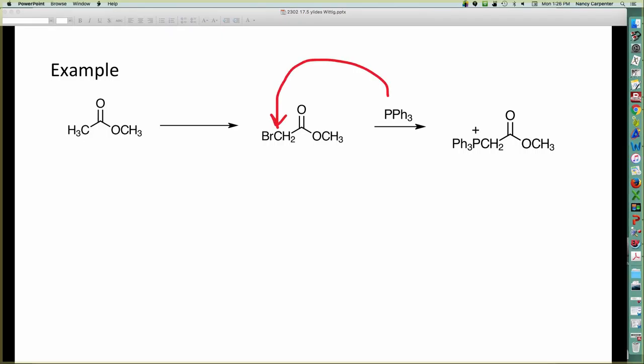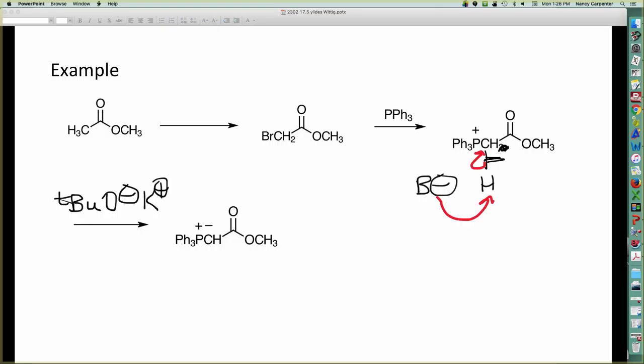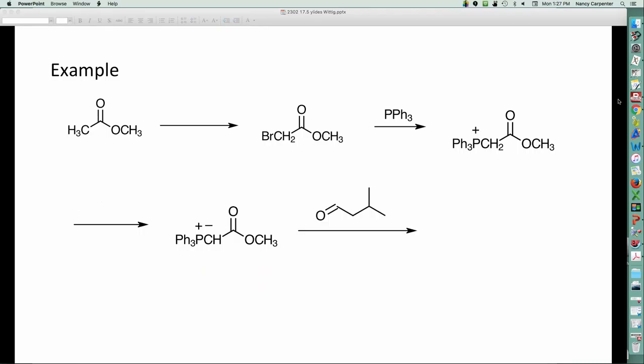Once I have the alpha bromo ester, well, yeah, I can just kick out my leaving group to make my phosphonium salt. Here's the counter ion, Br minus. Now, what do I need to do? I need to deprotonate it. So, what should I use to deprotonate it? Well, there's all kinds of different possibilities. One good possibility, especially when you have an alpha hydrogen like this that's next to a carbonyl, it's going to be pretty easy to remove because of the carbonyl. So, I think we can just add potassium butoxide. So, my base here just comes along and rips off that hydrogen to make my ylide.